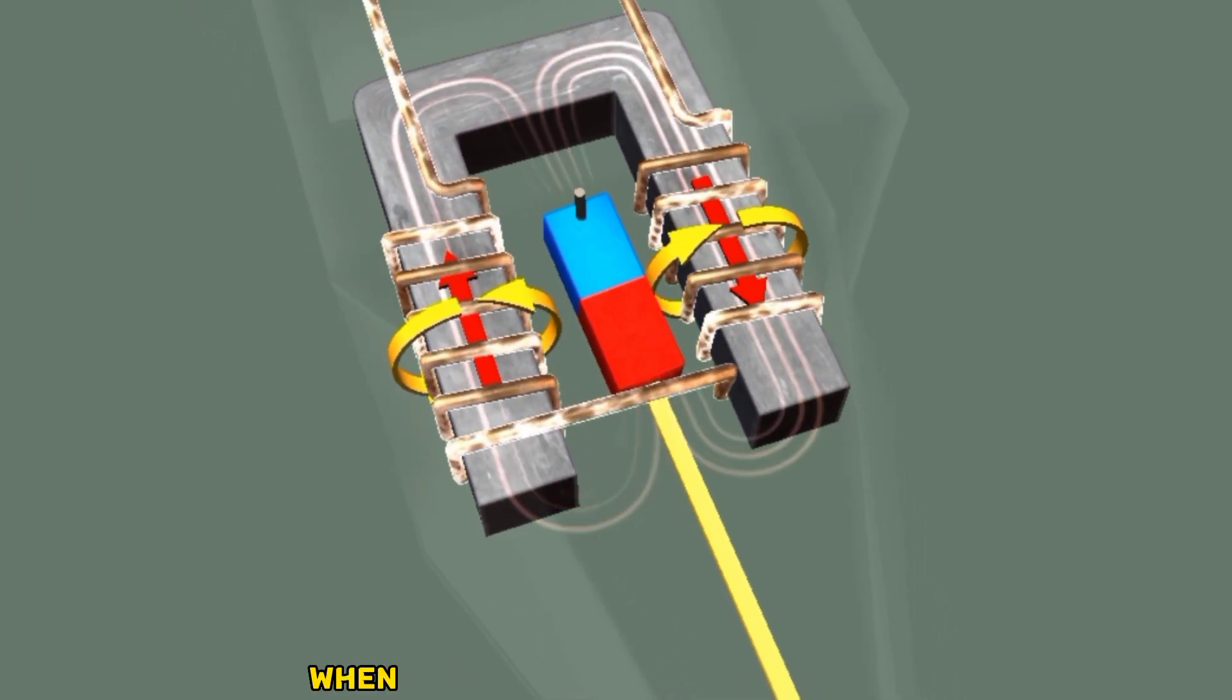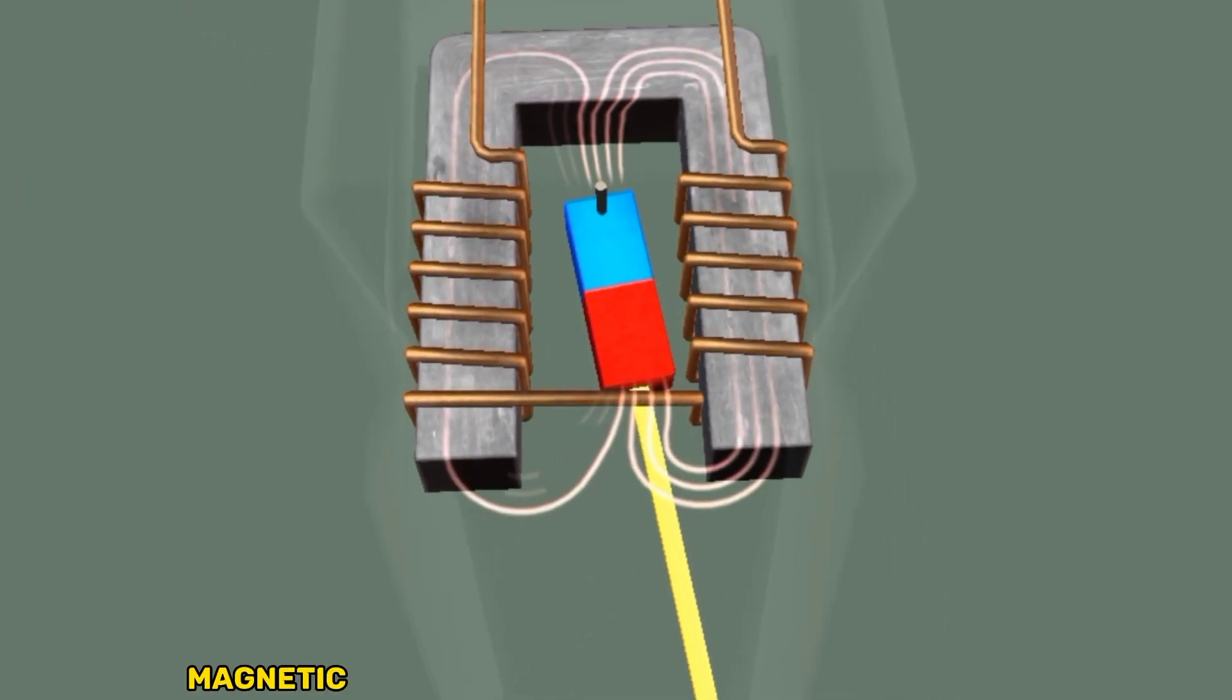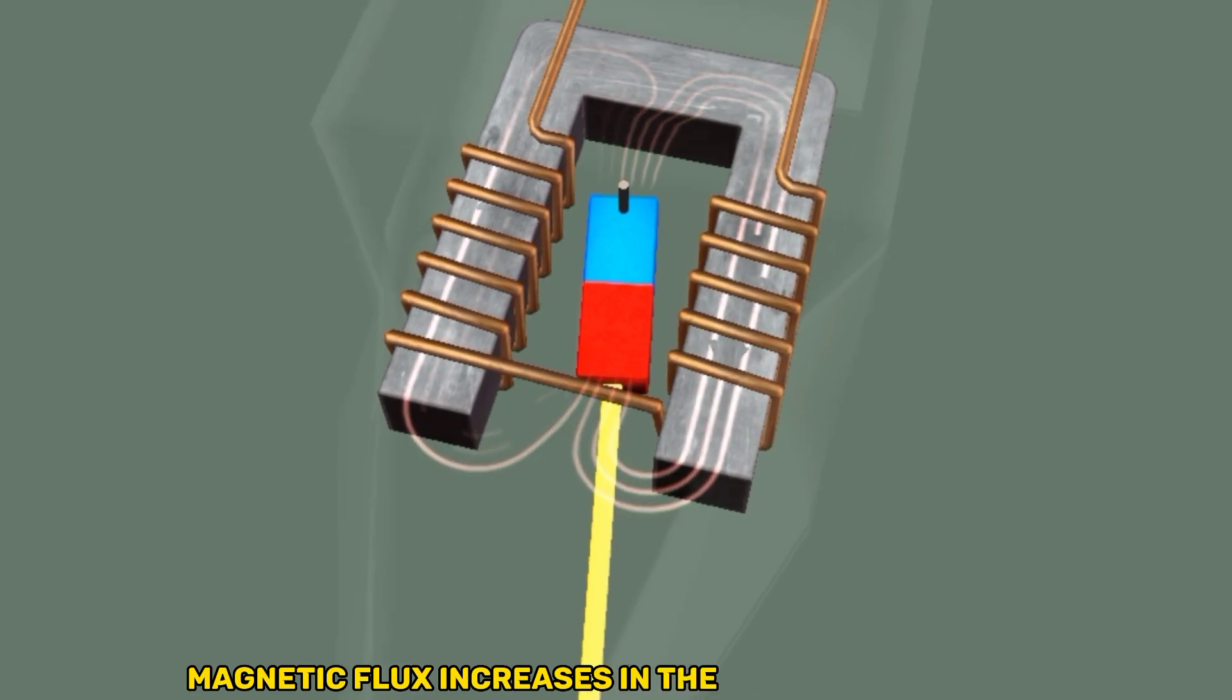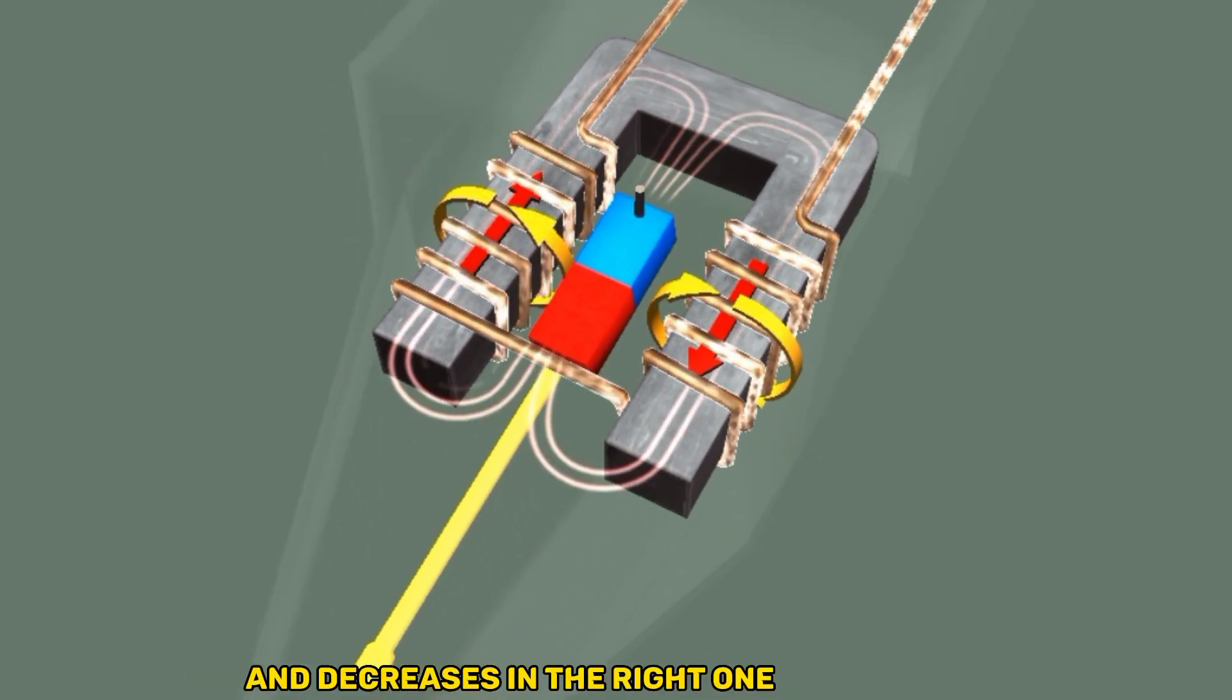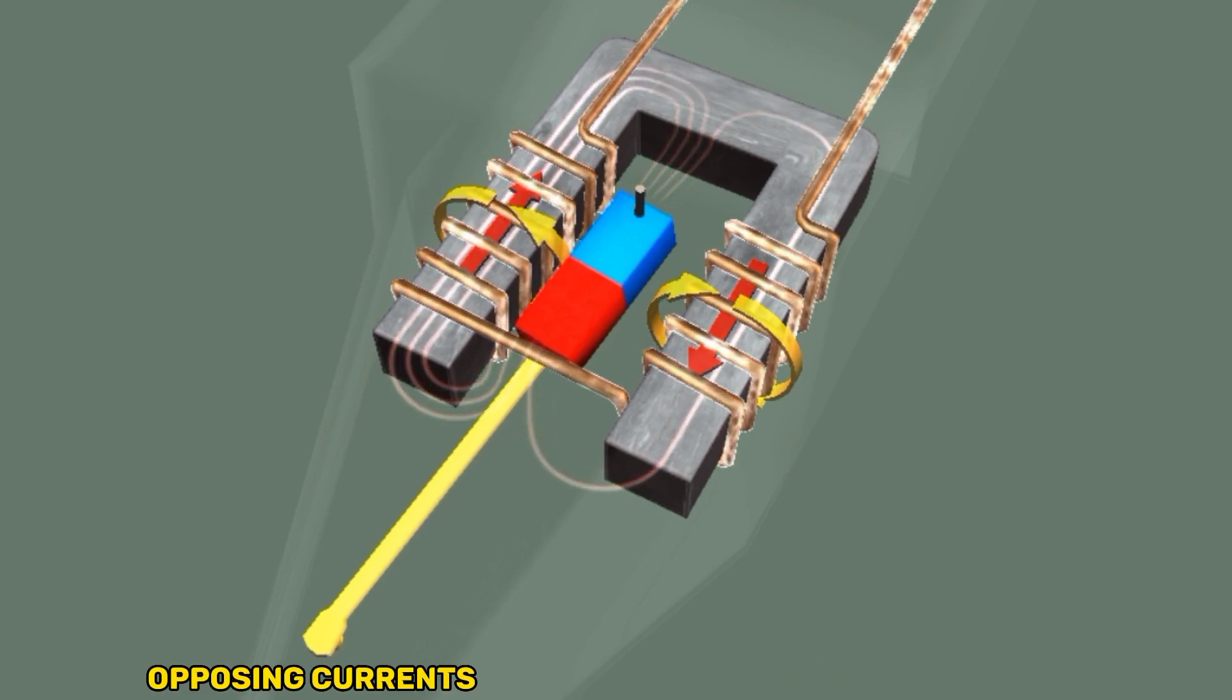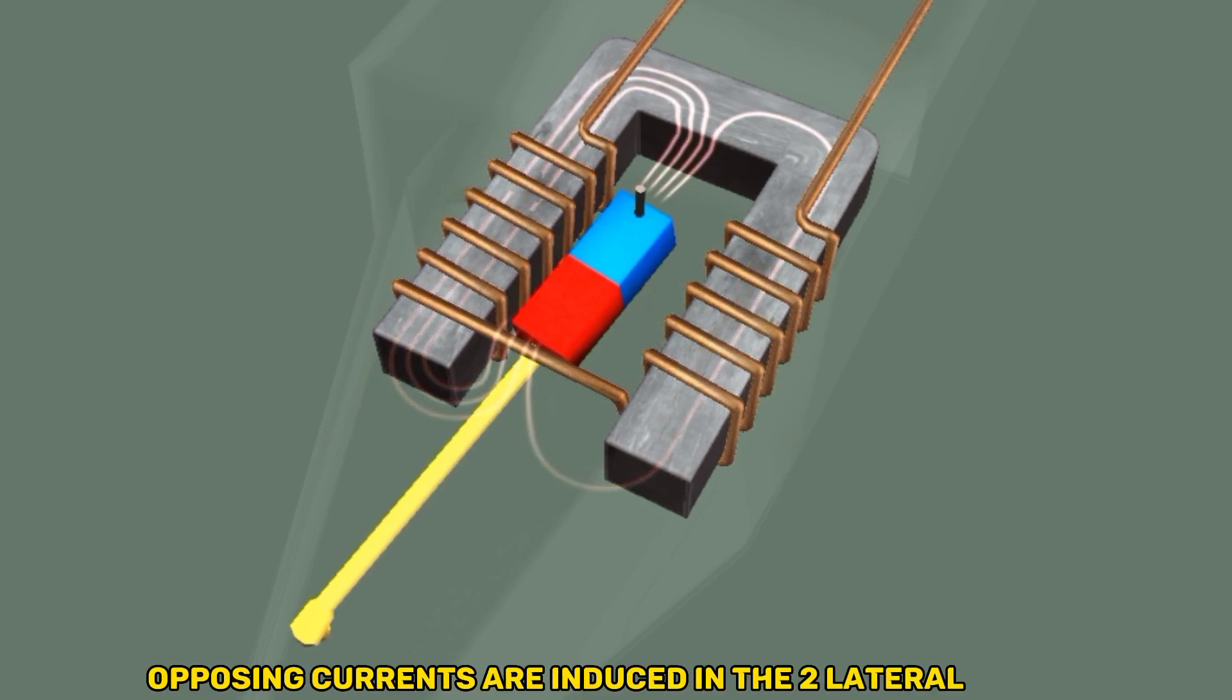In the animation, when the needle moves to the left, magnetic flux increases in the left lateral coil and decreases in the right one. Therefore, opposing currents are induced in the two lateral coils.